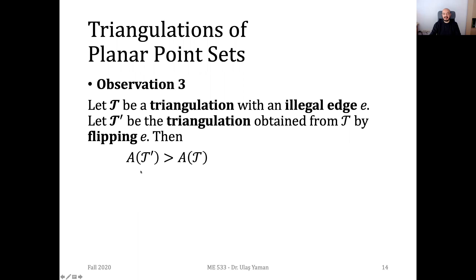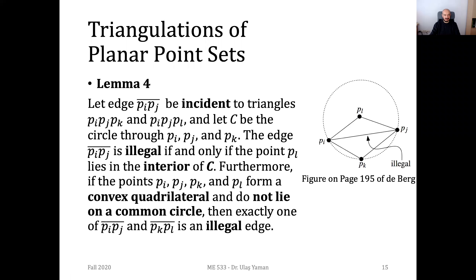Then we can say that the angle vector of tau prime, the new triangulation, is lexicographically larger than the angle vector of the initial triangulation. Now we have another small theorem, Lemma 4.